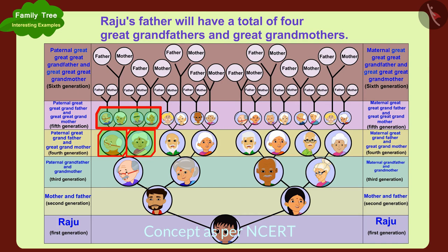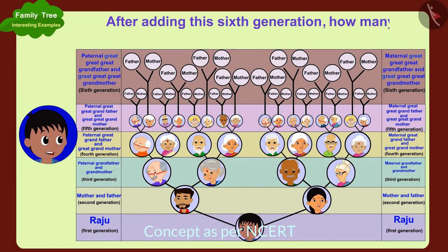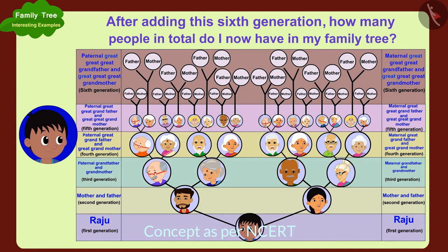In this way, Raju's father will have a total of four great grandfathers and great grandmothers. After adding this sixth generation, how many people in total do I have now in my family tree?